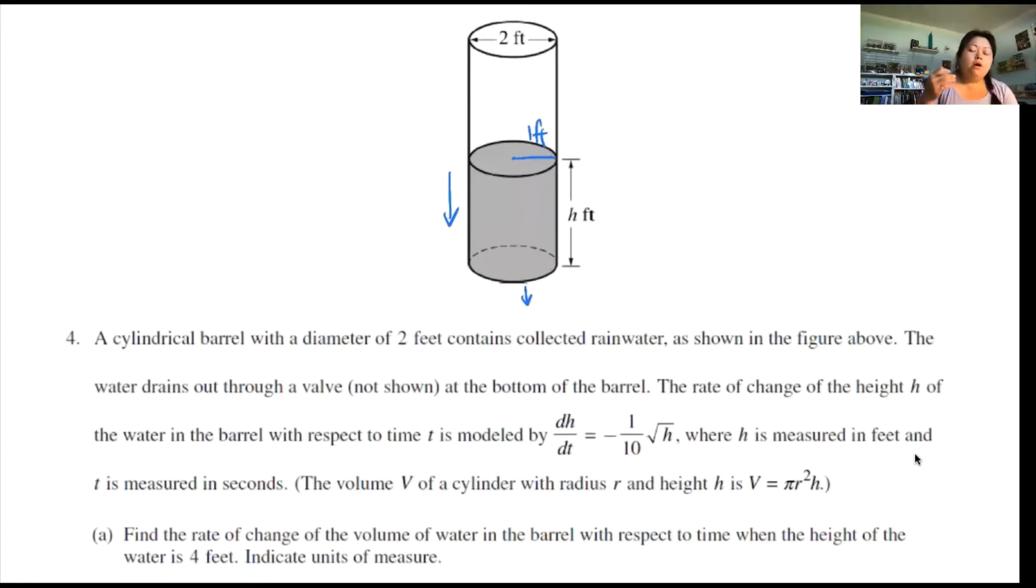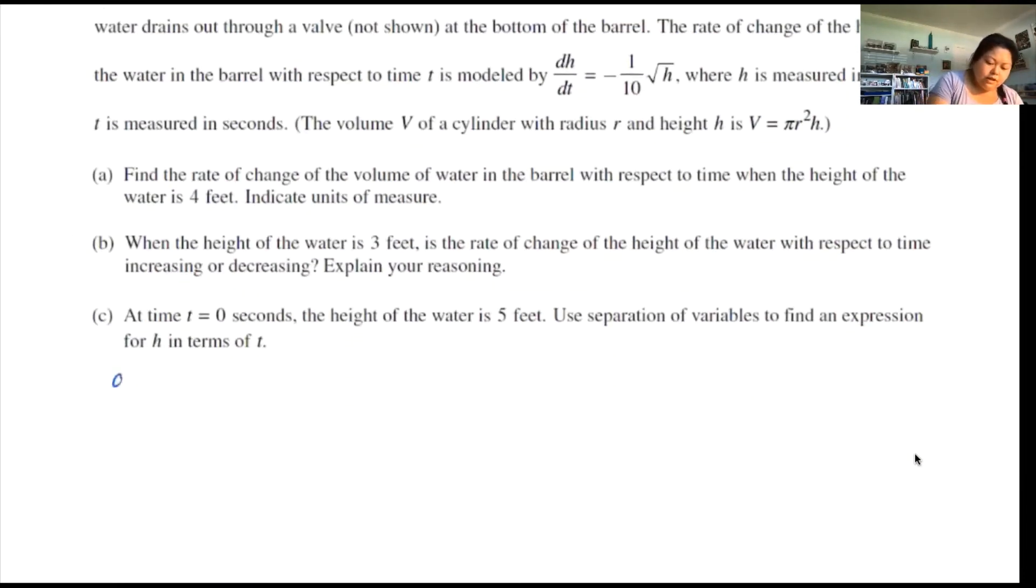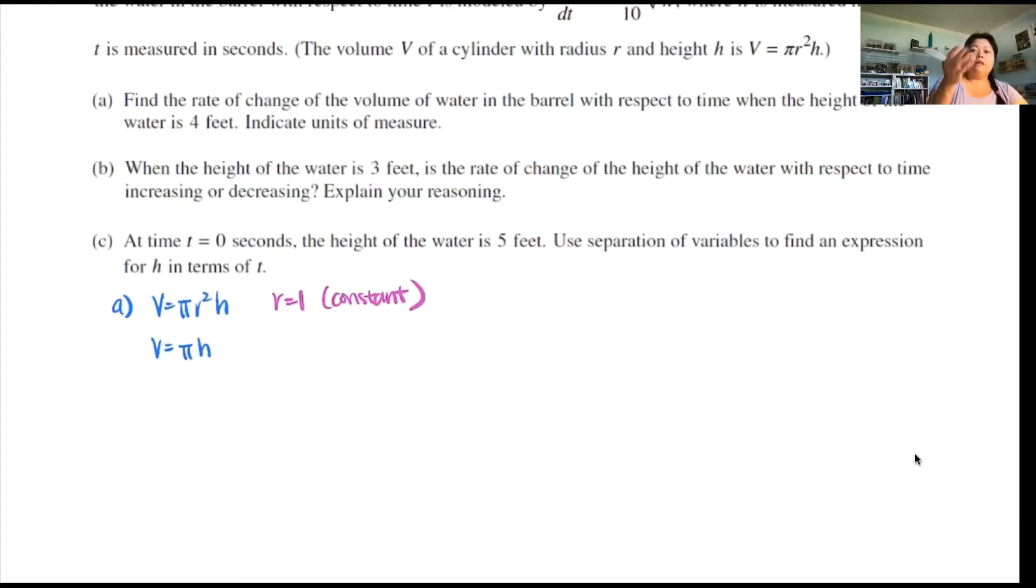Remember, our radius is constant here. So in part A, we start with volume equals pi r squared h. And again, reminding yourself that r is 1 because this is constant, I can actually already put it in there. So you get pi h. Now you can take the derivative because it's a related rates problem. You get dV/dt equals pi times dh/dt.